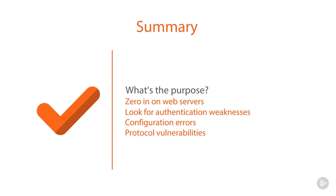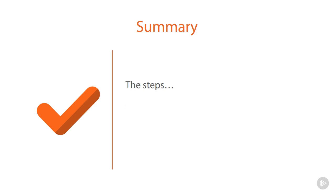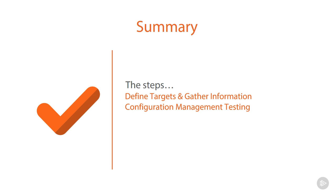We also talked about looking at protocol vulnerabilities, because these applications are running on complex systems with many different levels of attack vectors that we need to examine. We then went through the different steps during the pentesting phase: we have to identify which systems are running web applications, and afterwards we gather as much information as possible — not only about the system itself but its services and the apps running on that box. We then talked about configuration management testing. Most web application attacks take place because of improper configuration.